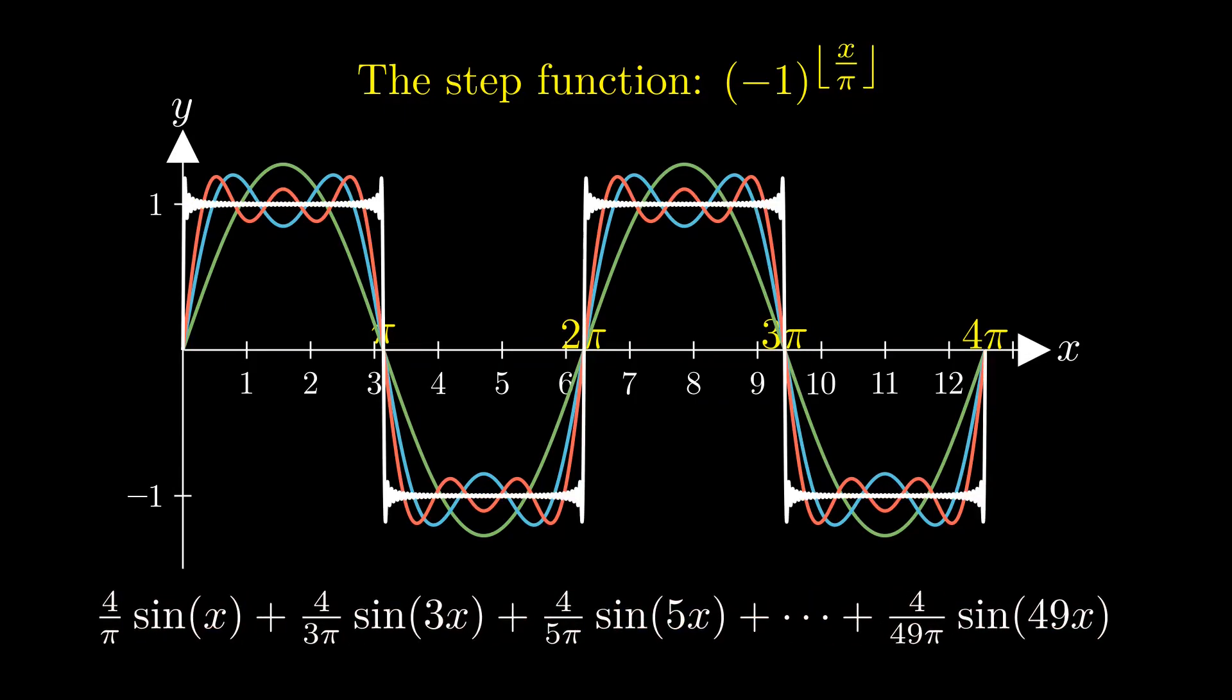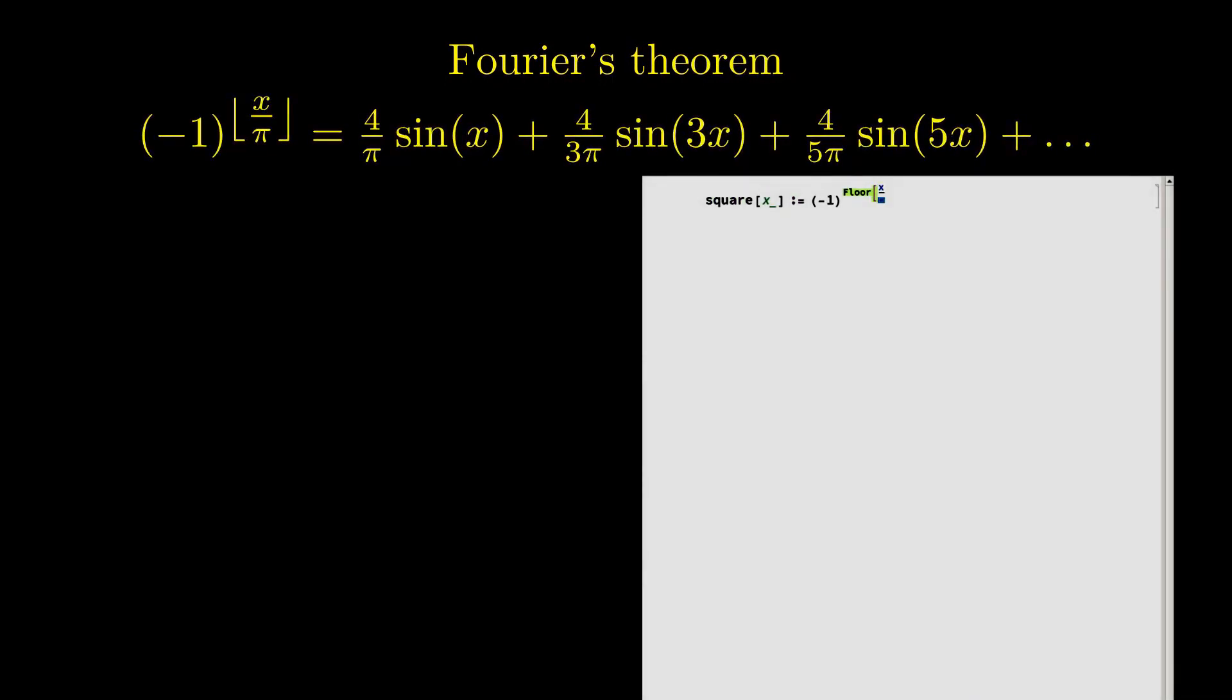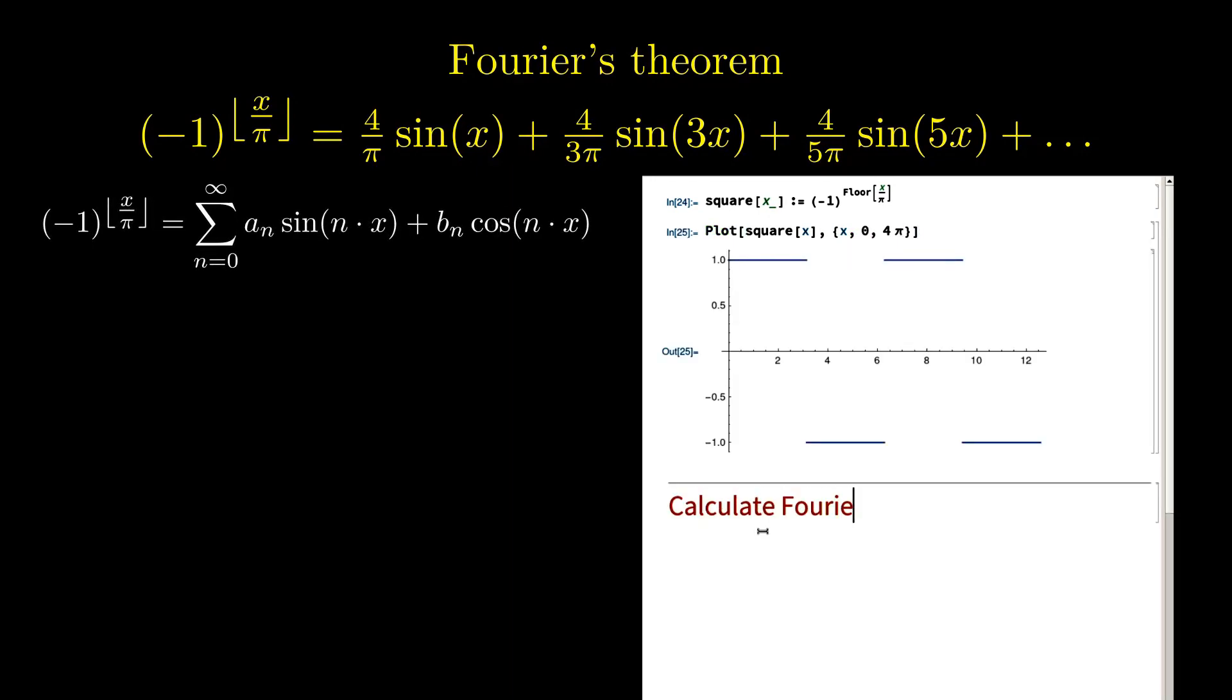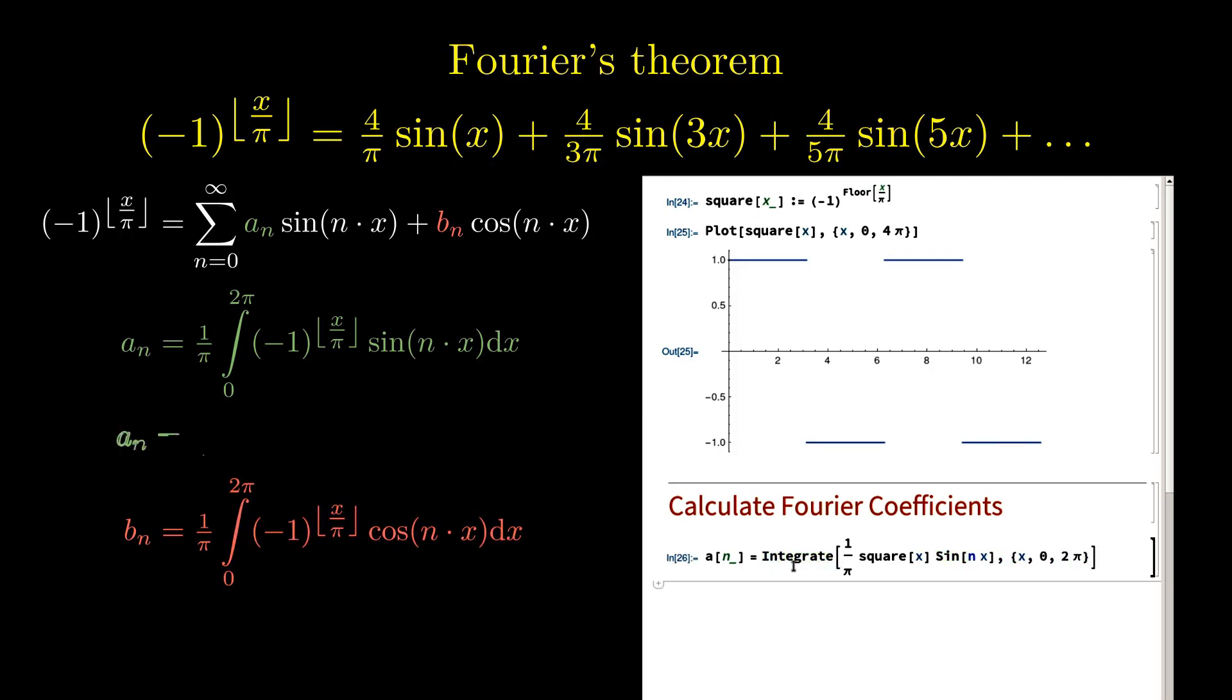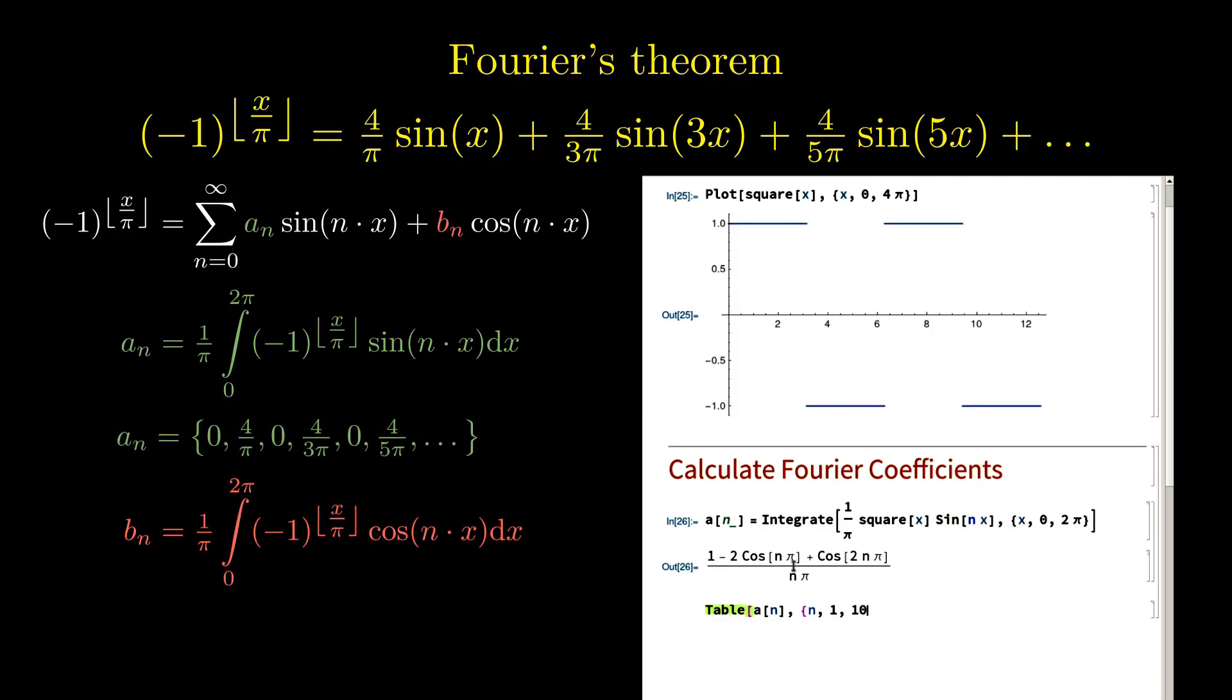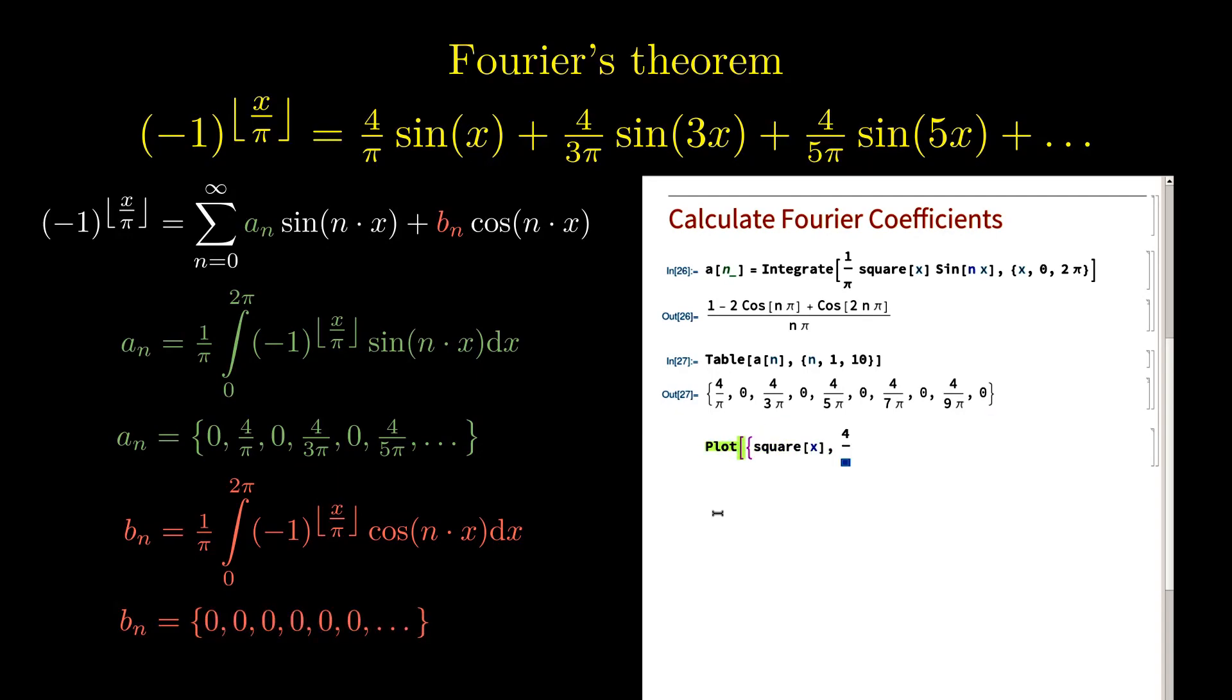The additional contributions are called higher harmonics and the series of all coefficients in front of the sine functions are called the Fourier transform of the step function. They can be calculated from the original function by means of Fourier's theorem, which states that any periodic function can be expressed as a sum of sine and cosine functions. The Fourier transformation maps any periodic function into a series of coefficients and in return this series can be used to approximate or rebuild the original function.